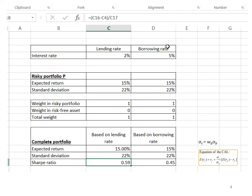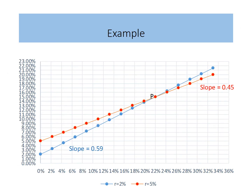You can repeat the working for a different borrowing rate of 5%. In this graph, I make use of the calculation to draw the capital allocation line based on different lending and borrowing rates. The intercepts at the y-axis of 2% and 5% mean we invest 100% in the risk-free asset and 0% in risky portfolio P. The blue line, which is the capital allocation line based on the lending rate of 2%, is steeper and has a higher Sharpe ratio of 0.59. On the other hand, the red line, which is the capital allocation line based on the borrowing rate of 5%, is flatter and has a lower Sharpe ratio of 0.45.